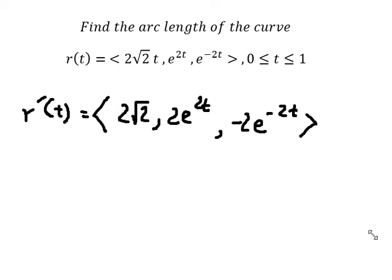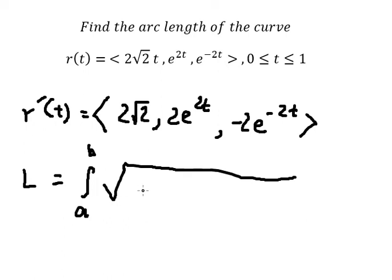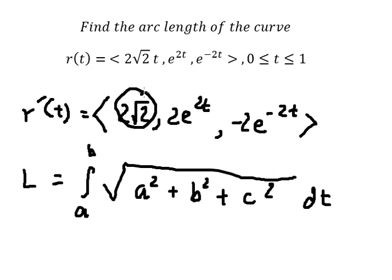Now we can apply the formula for arc length. We have the integral from a to b of the square root of a squared plus b squared plus c squared, dt. Here a, b, c correspond to the three component derivatives — so a equals zero, b equals one.